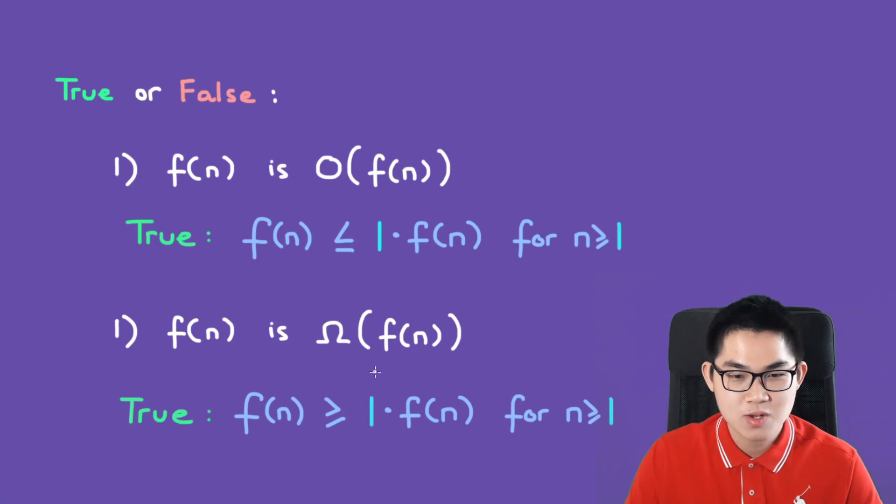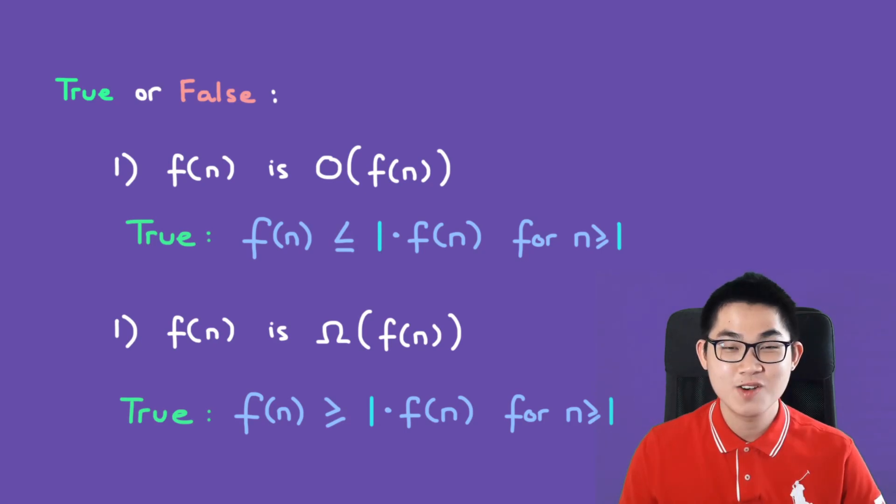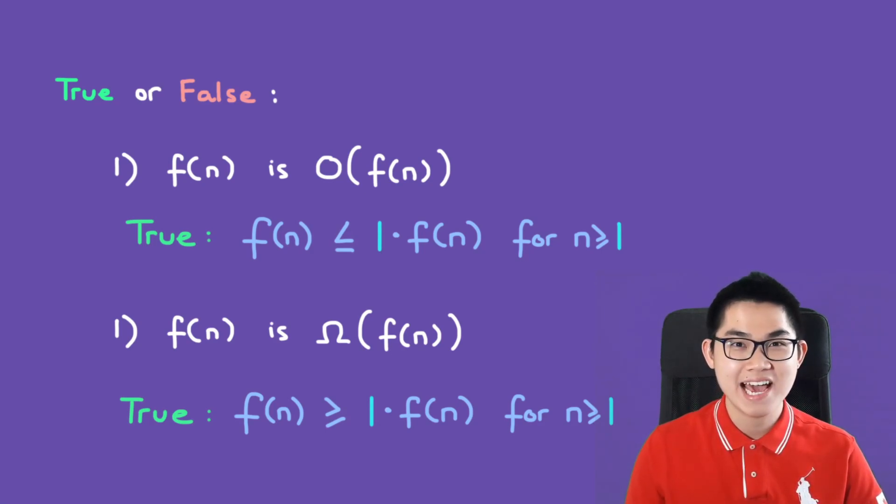And for this one, you also use the inequality. But this time, f(n) is greater than or equal to 1 times f(n). So c is equal to 1 and n₀ is also equal to 1. So this is very important: f(n) is both big O of itself and big omega of itself.